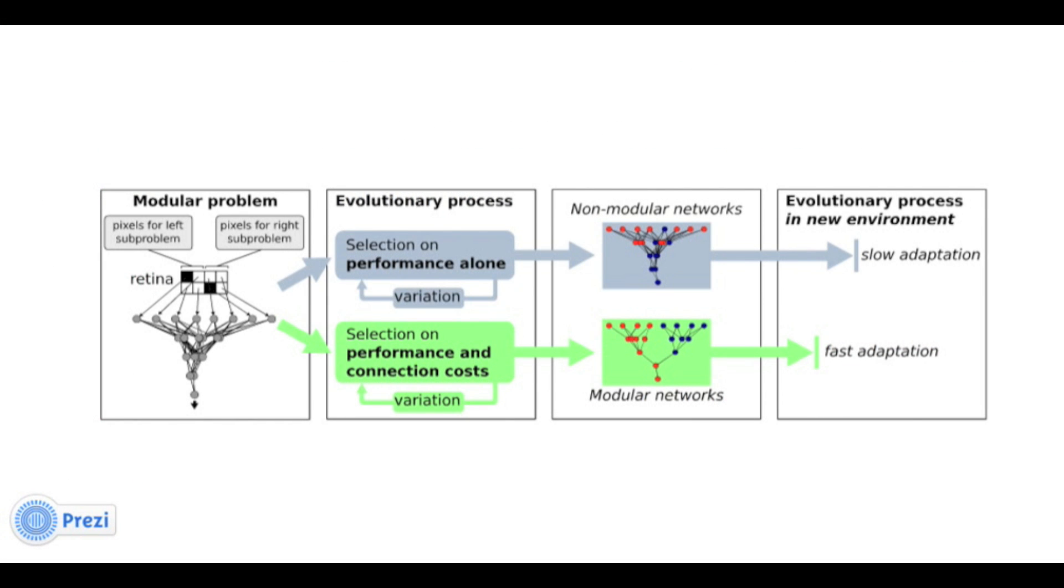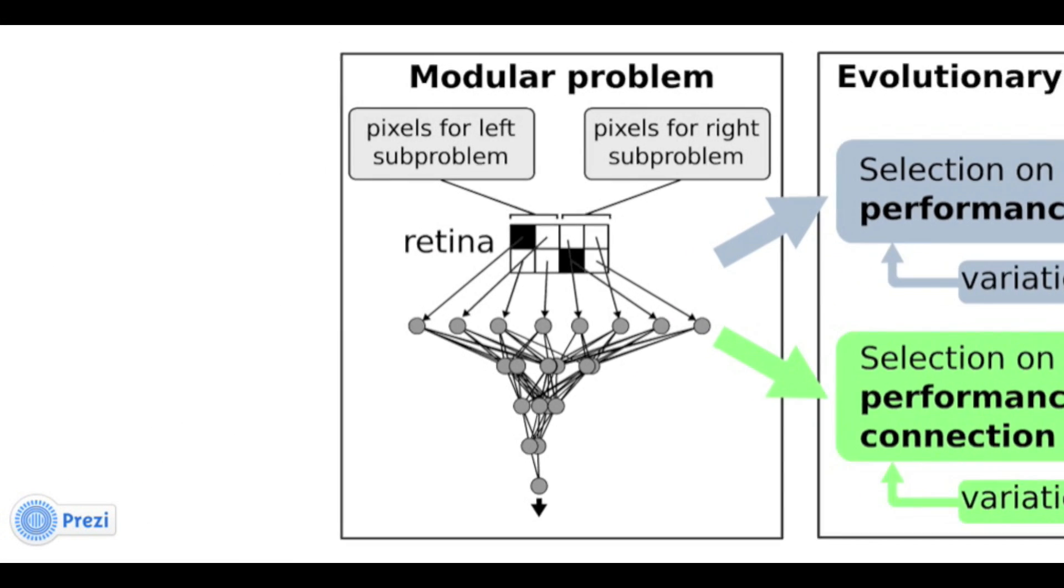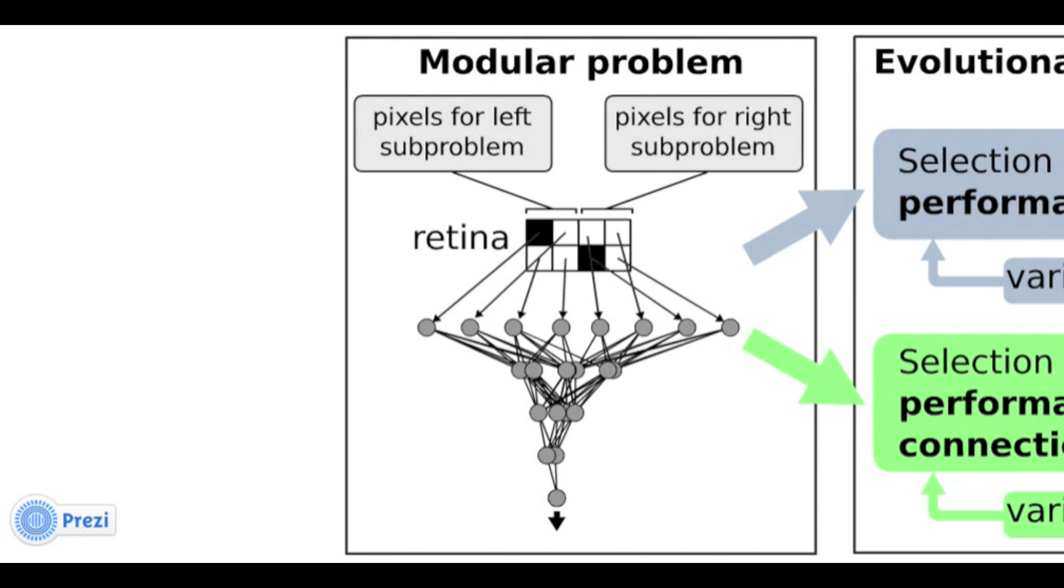In computer simulations, we evolved neural networks to solve a problem that can be decomposed into two separate problems.